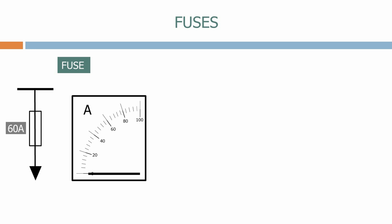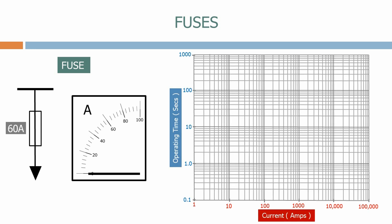Here we have a 60 amp fuse protecting a feeder. Here we have a logarithmic graph with the operating time in seconds down the left hand side and the current in amps across the bottom.